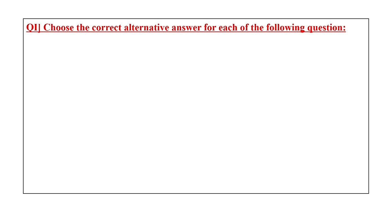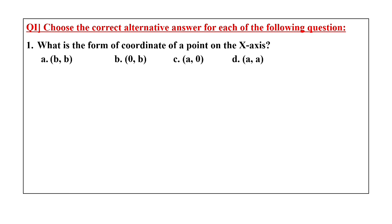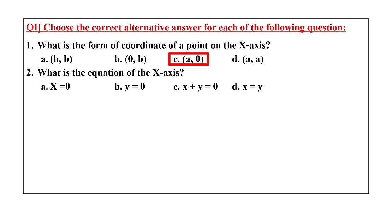The first question is: what is the form of coordinates of a point on the x-axis? For a point on the x-axis, the y value should be 0. So in the given four options, option C is the correct answer: x equal to a and y equal to 0.